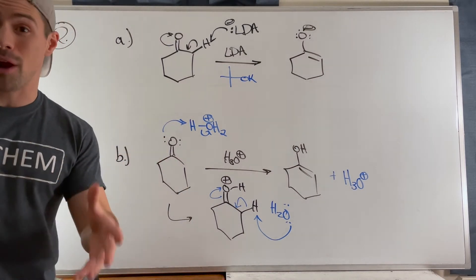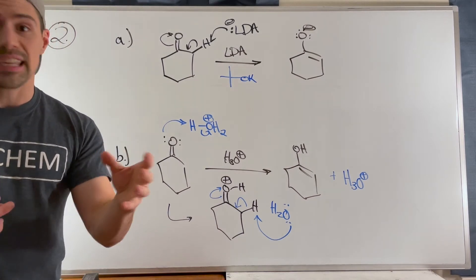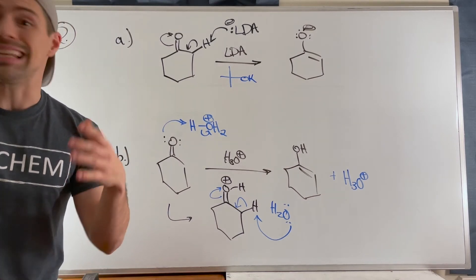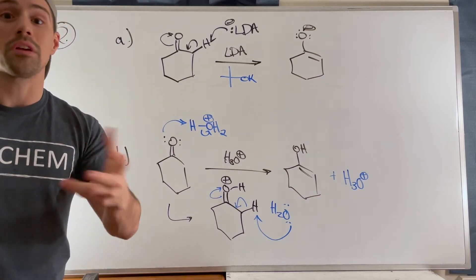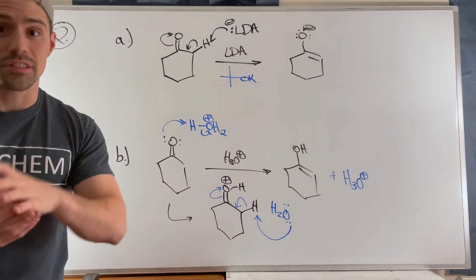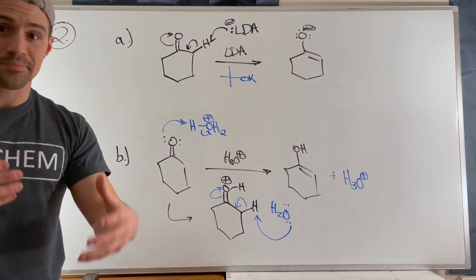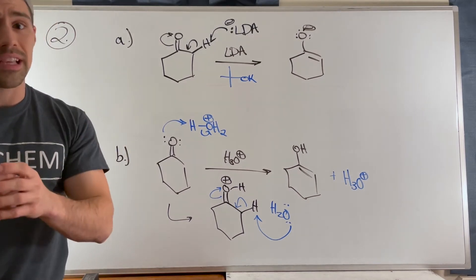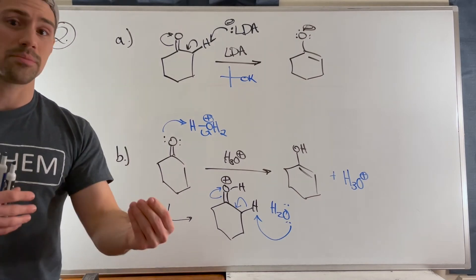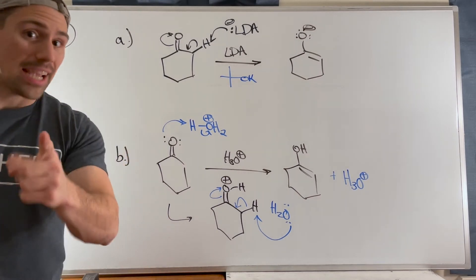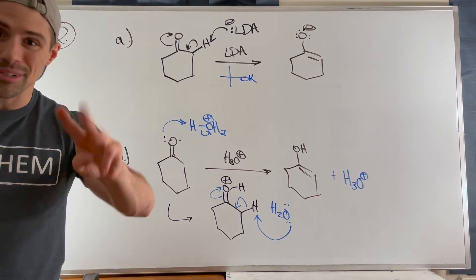Problem three is a barrage of kinetic enolates, thermodynamic enolates, and enols. Remember: kinetic enolate conditions are cold with a big bulky base; thermodynamic enolate conditions use a small base and are a bit warmer; and for enols you always make that more substituted double bond. But I can talk about it all day — might as well just get to it.